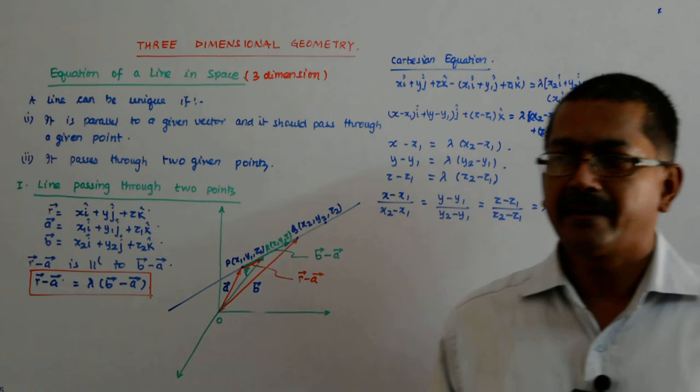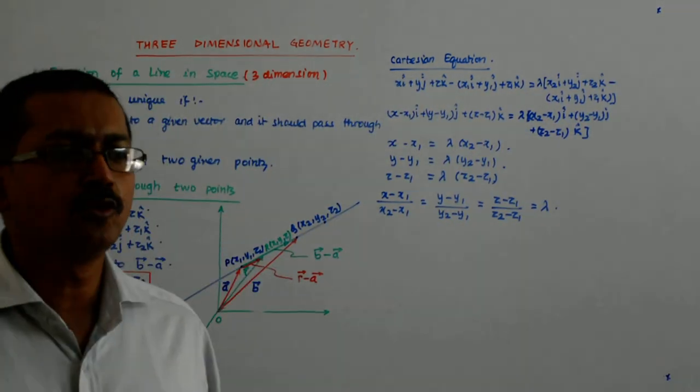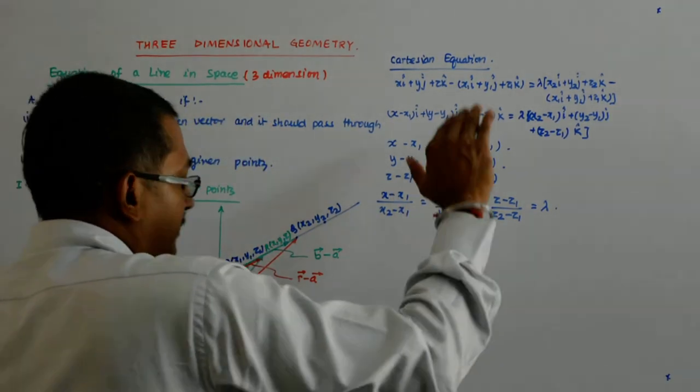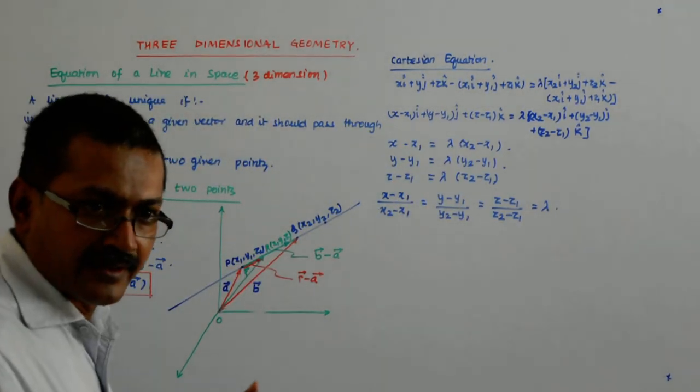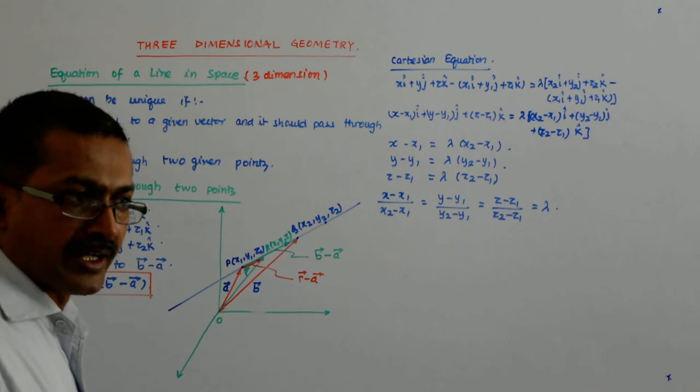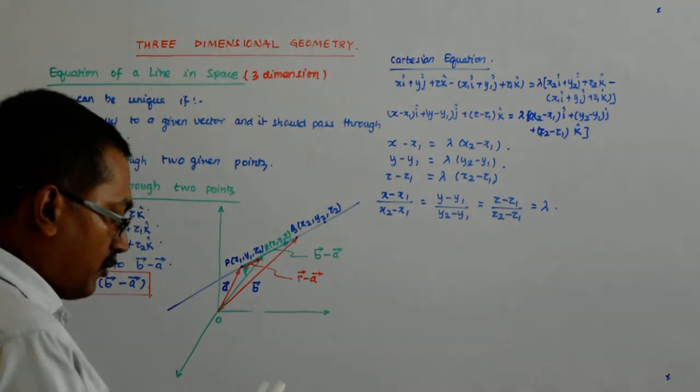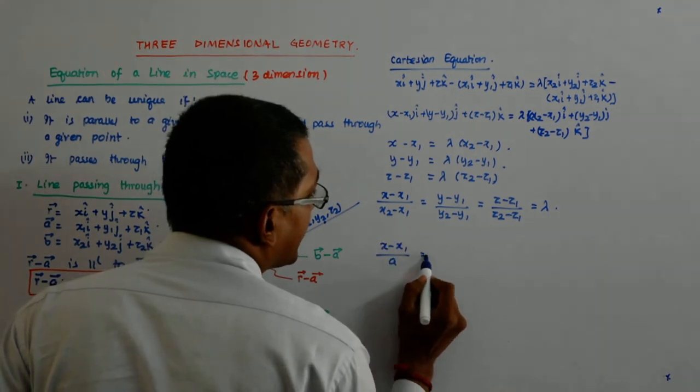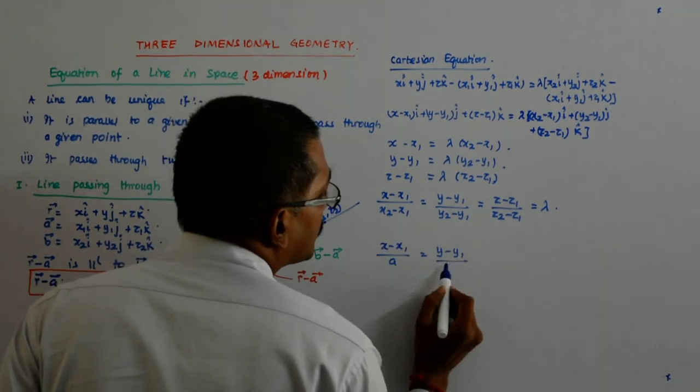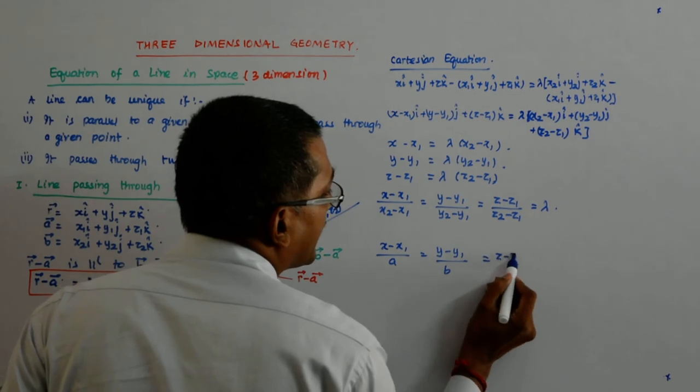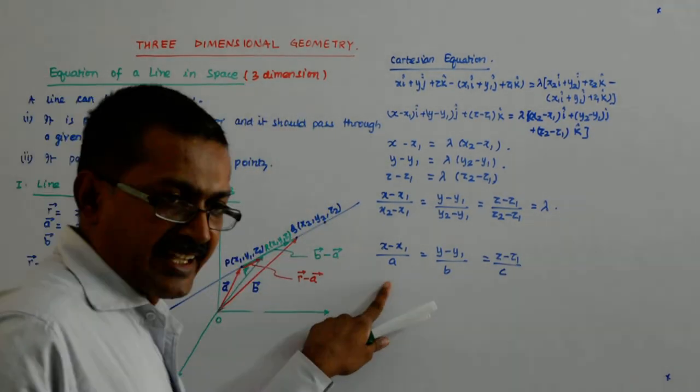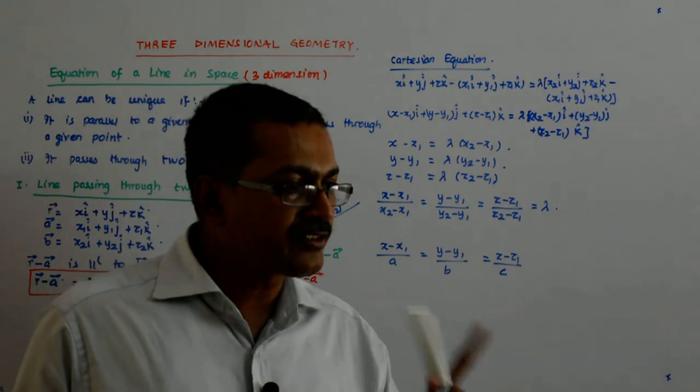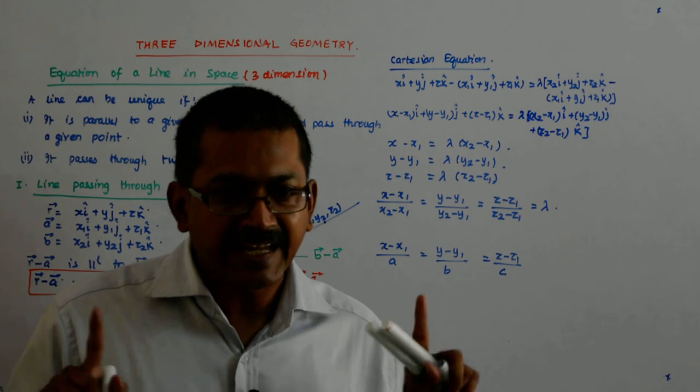Now, if you compare it with whatever we have done earlier, you will find it to be extremely identical to that. Earlier, when it was parallel to a vector, it was parallel to a vector and it was passing through one point, what was the Cartesian equation? Let us come to that. It was x minus x1 upon a is equal to y minus y1 upon b is equal to z minus z1 upon c.